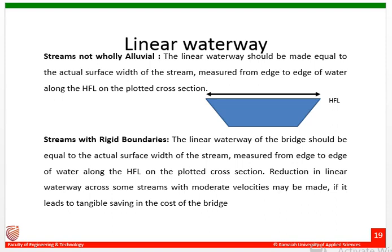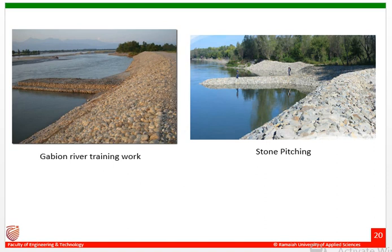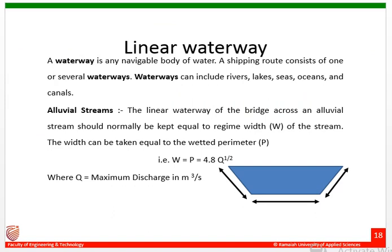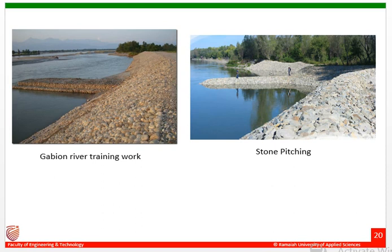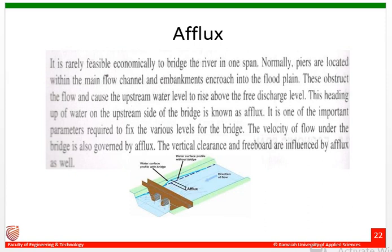As you can see in the figure, there are two different methods of river training works — stone pitching provided both on the upstream and downstream sides of the river — so that it does not cause bad impact on the stability of the structure.